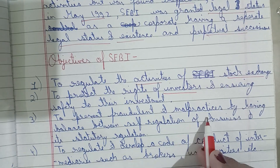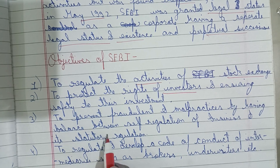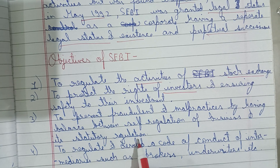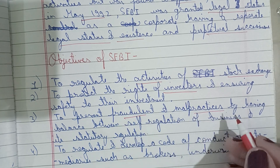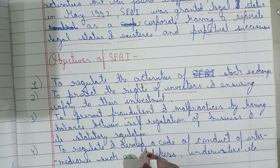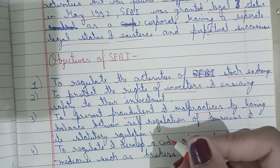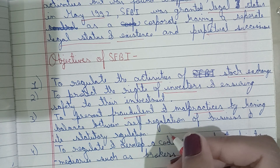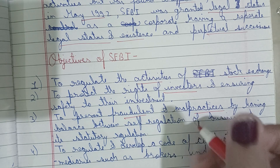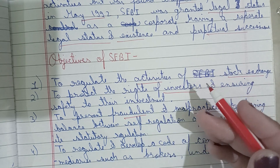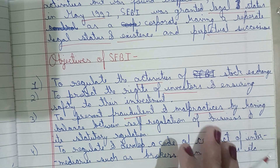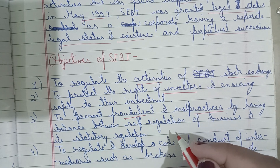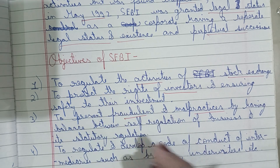Another objective is to prevent fraudulent and malpractices by maintaining a balance between self-regulation of business and its statutory regulation. If there is no fraud or malpractice, companies and investors will both benefit. SEBI imposes various regulations and rules to check the financial condition so that the company and the stock exchange are not biased.